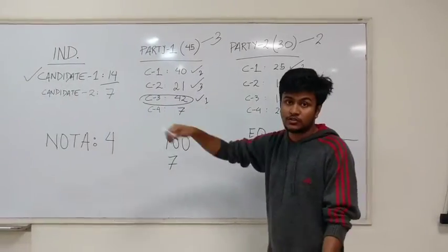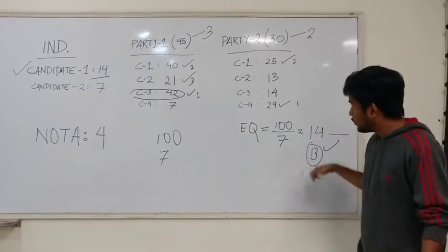There's no independent candidate. 13 is not sufficient. It drops to the next value. In this case it's 12.